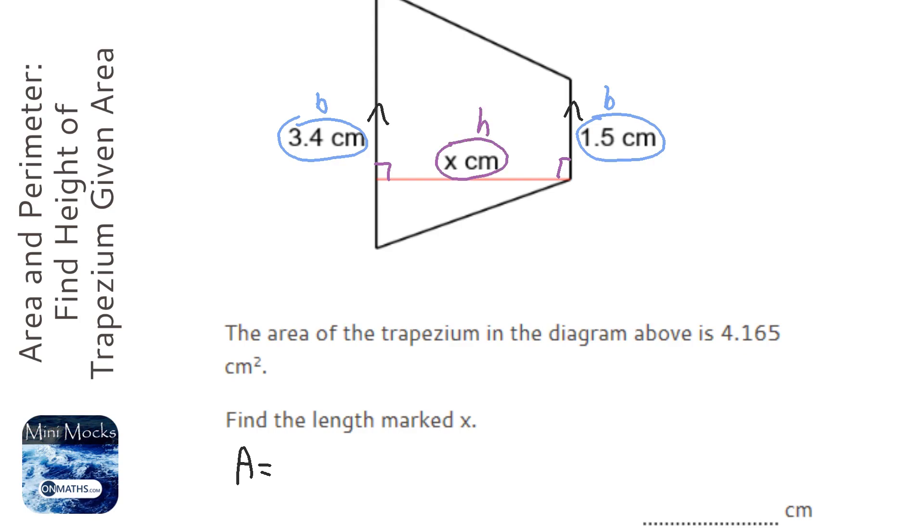So it's going to be half times 3.4 plus 1.5, and we're going to times it by the height, which is labelled as x. Now we know that the area is 4.165.